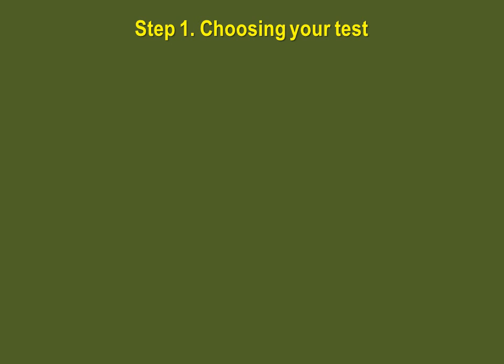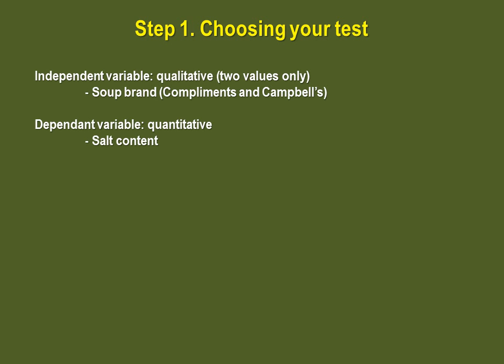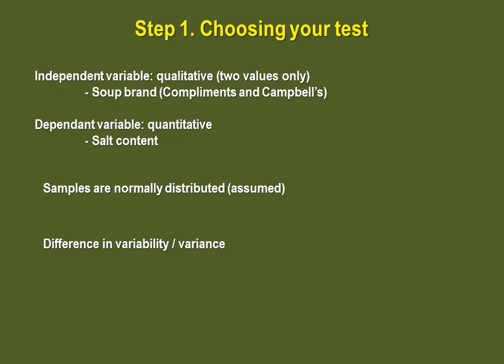To answer this question, we must go through the seven-step procedure. Step one is to choose the test. We have a qualitative independent variable — the brands of the soups — with two values, Campbell's and Compliments, and a quantitative dependent variable, the salt content. We must make sure the samples are normally distributed, which we will take for granted. Since we are looking not to check if the means are different, but rather if the variability is different in the two samples, we will use the F-test.